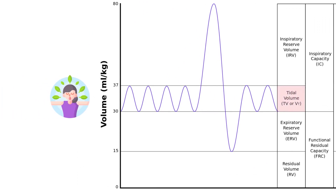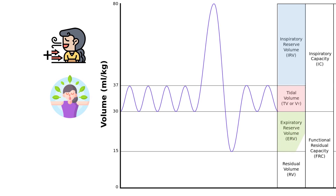Inspiratory reserve volume, which is the additional volume of air that can be forcibly inhaled after a normal inhalation. Expiratory reserve volume, which is the additional volume of air that can be forcibly exhaled after a normal exhalation.